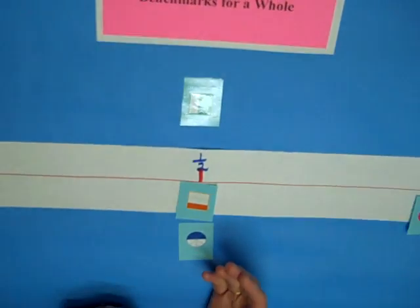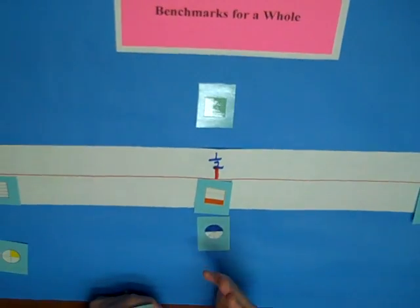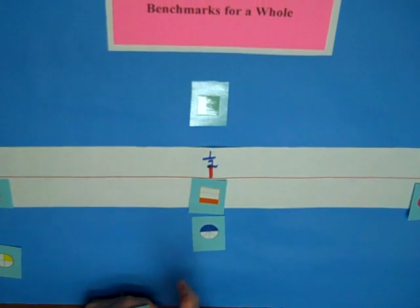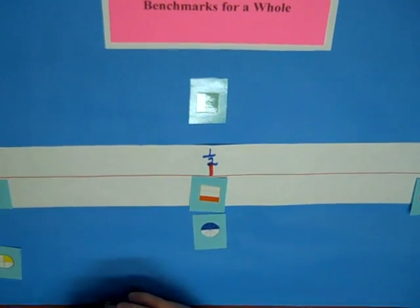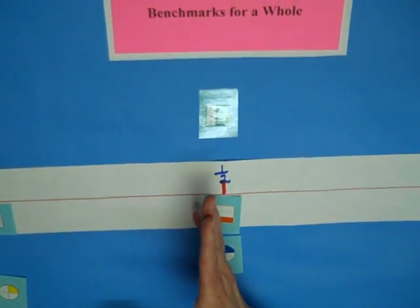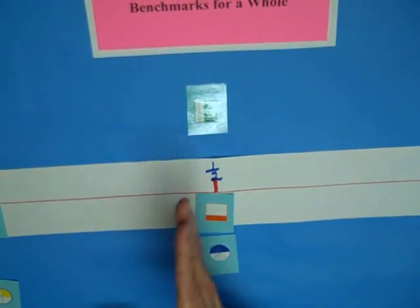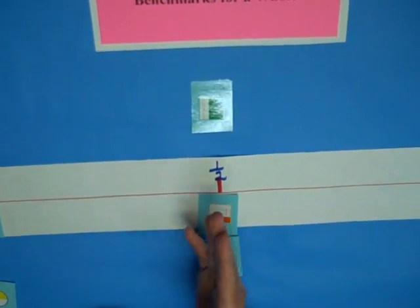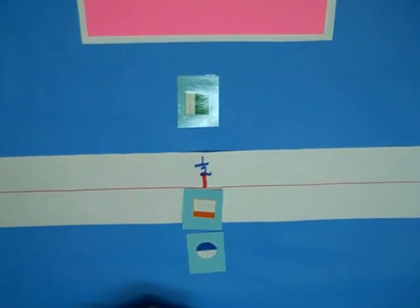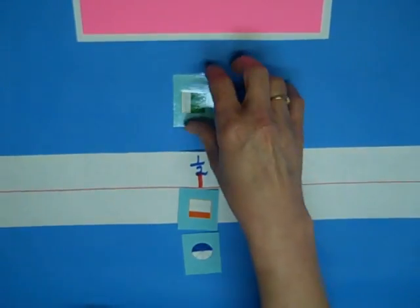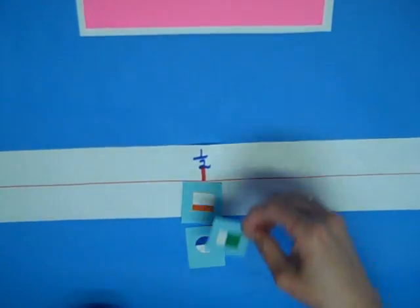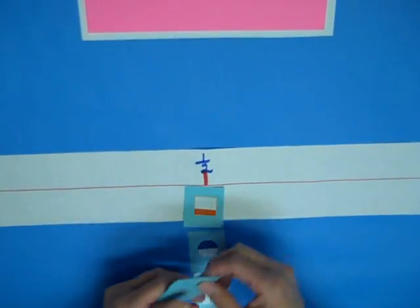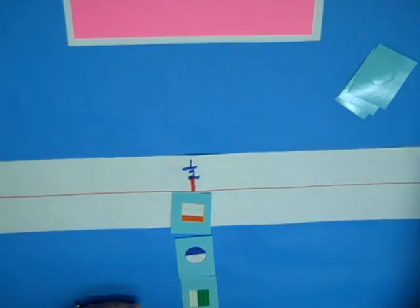Then we have three-fifths. You might ask the students: what would a half look like on that shape? Get them to make a line — where do you think it goes? And we could go on with our cards.